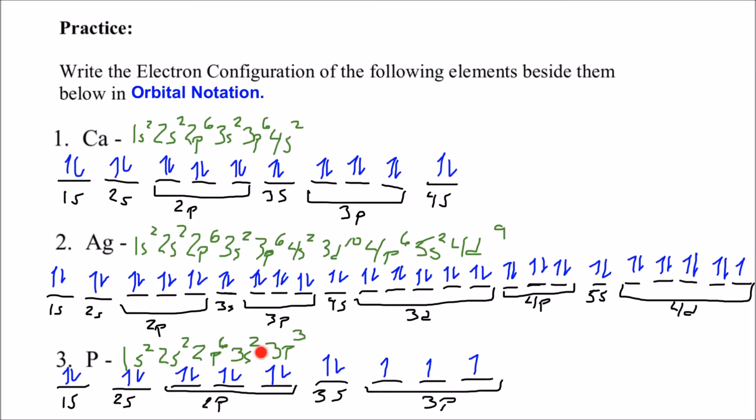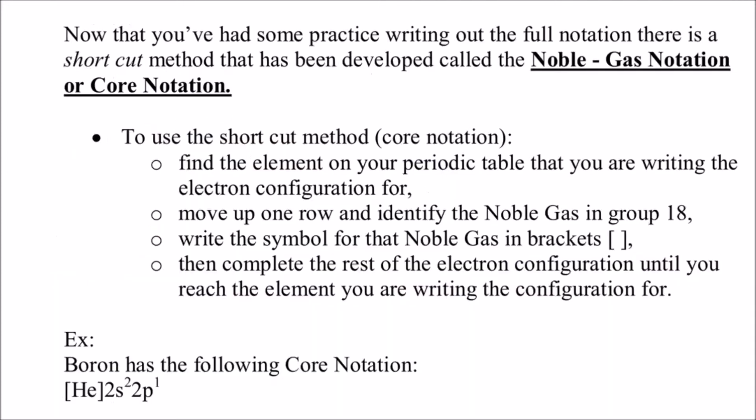Phosphorus ends in 3p3, so we fill up all of these with their electrons. And then the 3p orbital, each orbital's got one electron in it, so that it's got its three total.